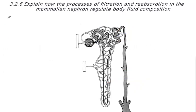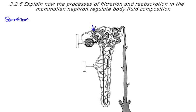The final section we're going to look at is the process of secretion. Secretion is important to make sure the blood is cleared of any toxic substances that are left over. Secretion occurs both passively and actively, depending on whereabouts along the nephron. Any nitrogenous waste not filtered from the glomerulus into the Bowman's capsule is mainly passively secreted into the proximal convoluted tubule — that includes urea and ammonia.